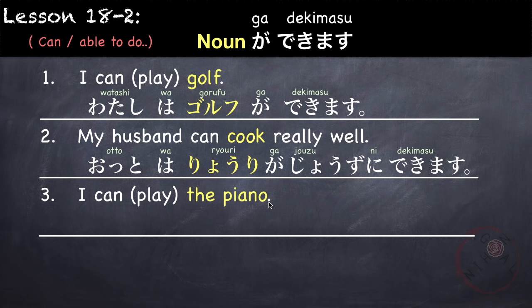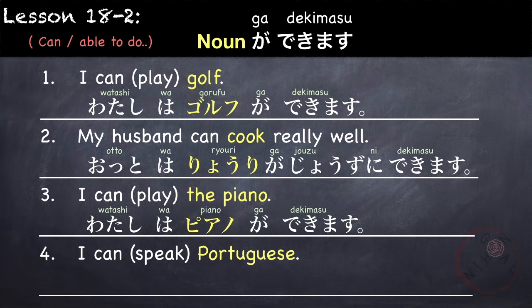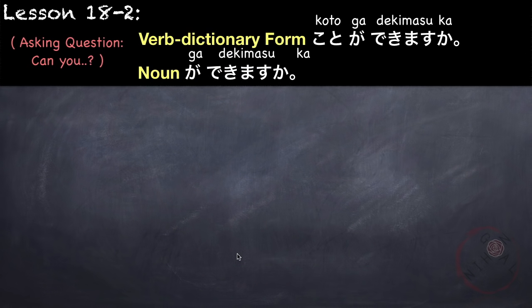Another example: I can play the piano. Here we have a musical instrument associated with the verb hikimasu. So we say watashi wa piano ga dekimasu. Literally 'I can piano,' but it's understood to mean 'I can play the piano.' Lastly, I can speak Portuguese: watashi wa Porutogarugo ga dekimasu.